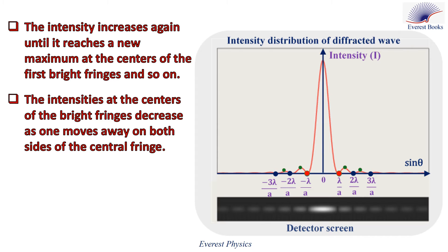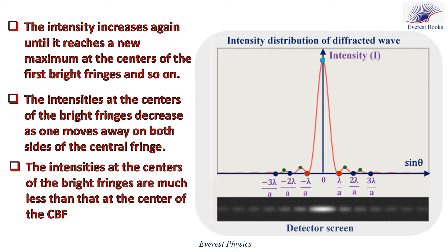Now, look at the blue point. The blue point represents the maximum intensity at the center of the central bright fringe. If we compare the blue point with the green points, we conclude that the intensities at the centers of the bright fringes are much less than that at the center of the central bright fringe.